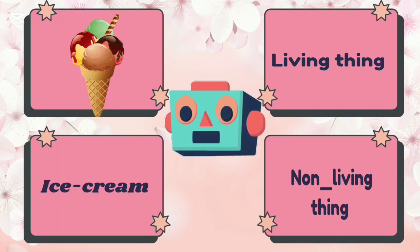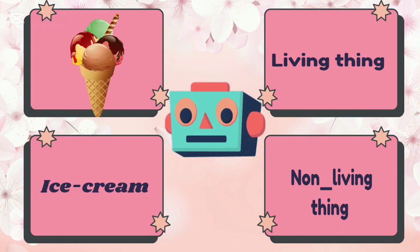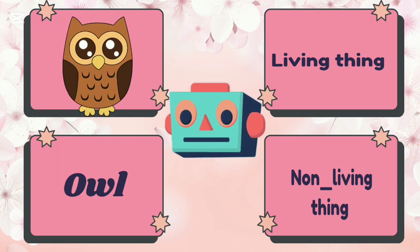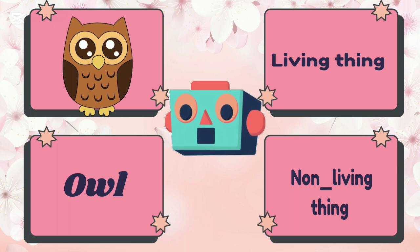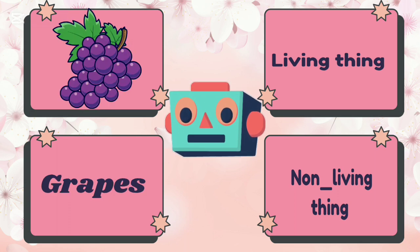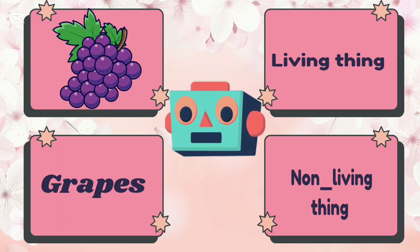Ice cream is living thing or non-living thing? Ice cream is non-living thing. Owl is living thing or non-living thing? Owl is living thing. Crab is living thing or non-living thing? Crab is non-living thing.